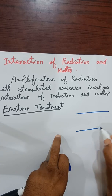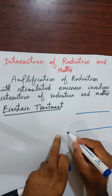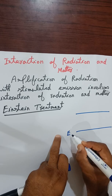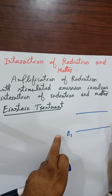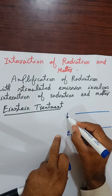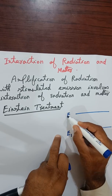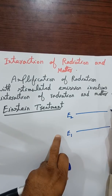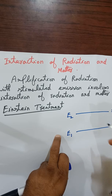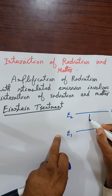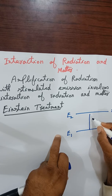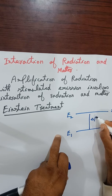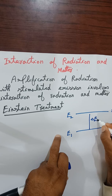According to Einstein, there are two levels of energy in an atom. Level one has energy E1 and level two has energy E2, and there is an energy gap between these two levels which is equal to delta E21.